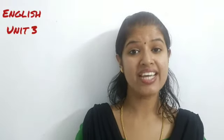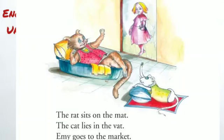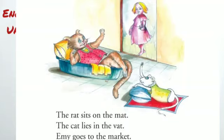Now we can go to the next picture. What can you see? You can see that both the cat and the rat are lying down, and Immy is standing. Look in your textbook. The rat sits on the mat. You can see the rat is sitting on a mat. The cat lies in the cot — the cot is a thing used to sleep, like a bed. Immy goes to the market.